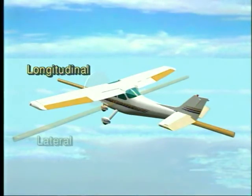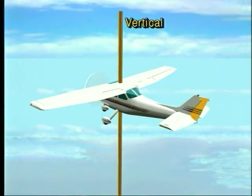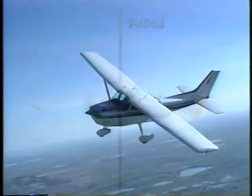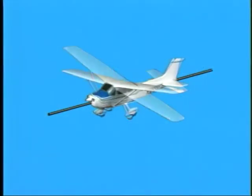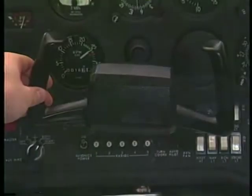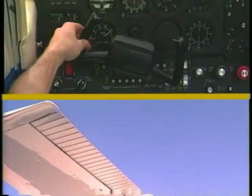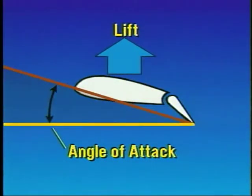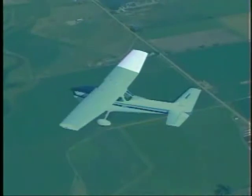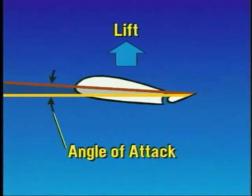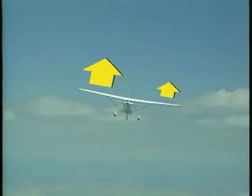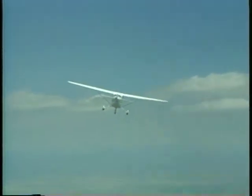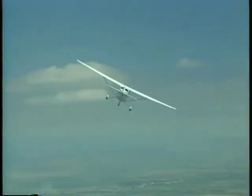The ailerons, elevators, and rudder create aerodynamic forces which cause the airplane to rotate about the three axes. When an airplane is banked, it rolls about the longitudinal axis. For a right bank, you rotate the control wheel to the right. This moves the left aileron down and the right aileron up. As the left aileron moves down, the angle of attack and the camber increase, producing more lift on the left wing. Conversely, as the right aileron moves up, the angle of attack and the camber decrease, which produces less lift. This difference in lift between the left and right wings causes the airplane to roll about the longitudinal axis. This roll will continue until you return the control wheel to the neutral position.